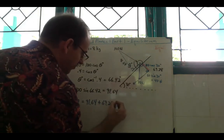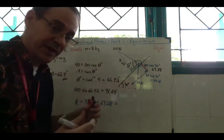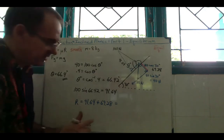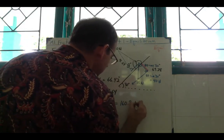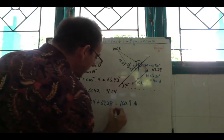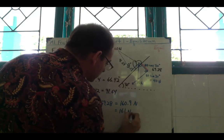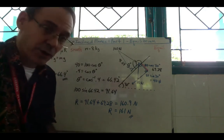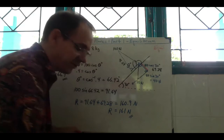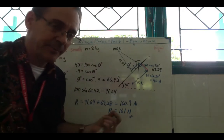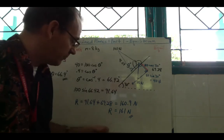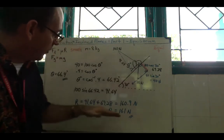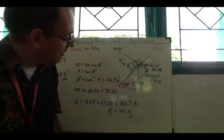R = 91.64 + 69.28 = 160.9, which rounds to 161 newtons. That is our capital R — the normal contact force. It may be called R or N depending on your curriculum; it really doesn't matter as long as you understand it represents the normal contact force. So we've solved for theta and the normal contact force.